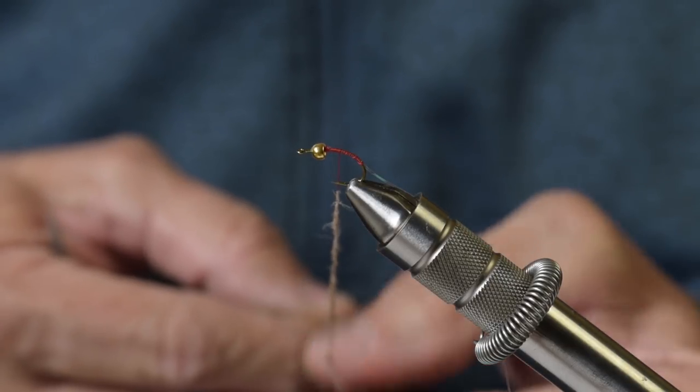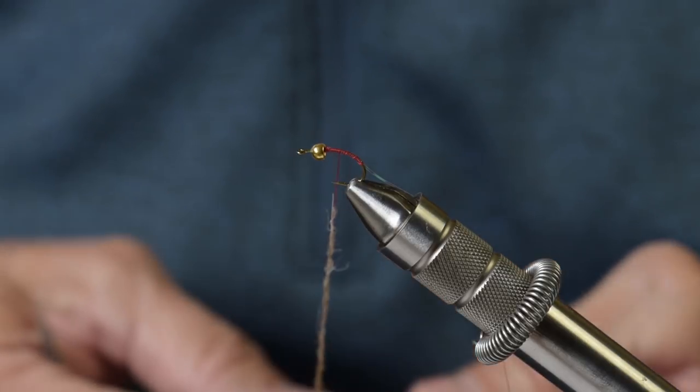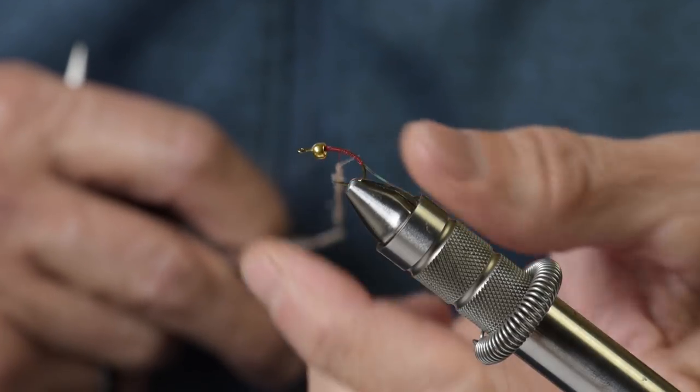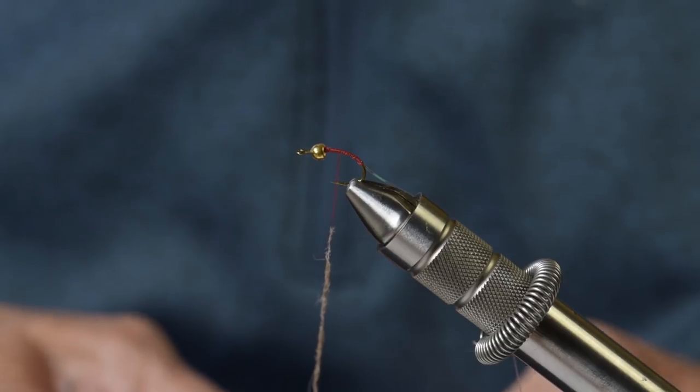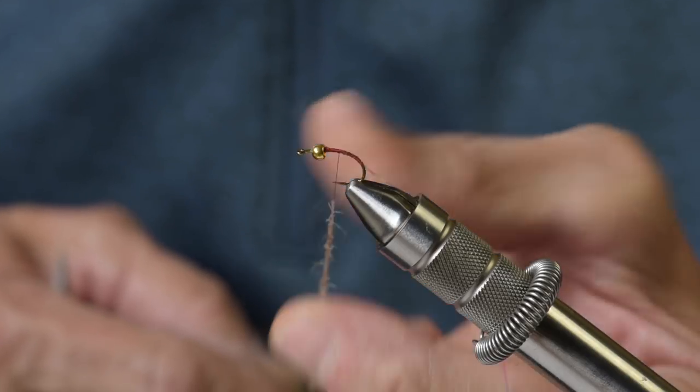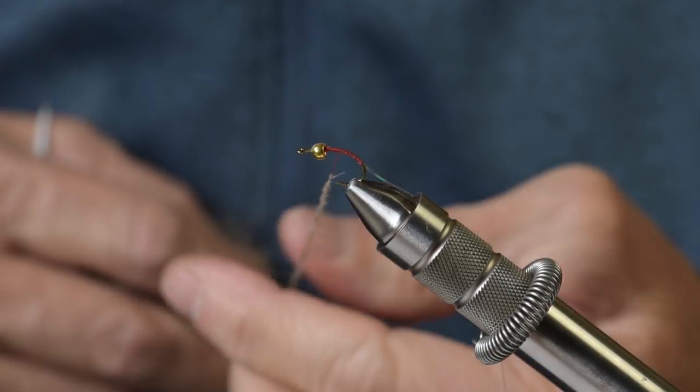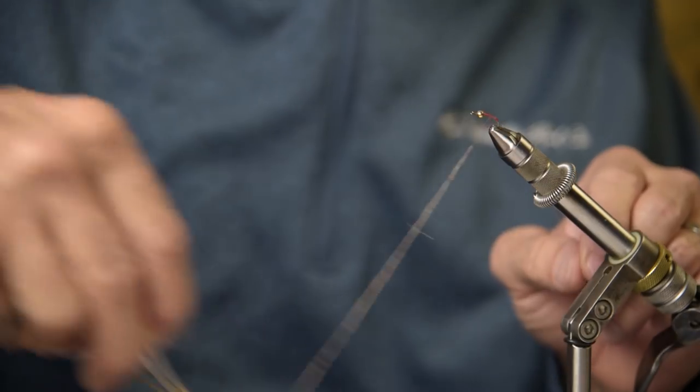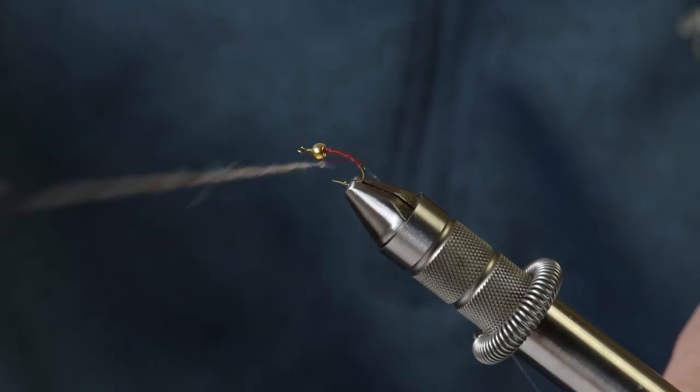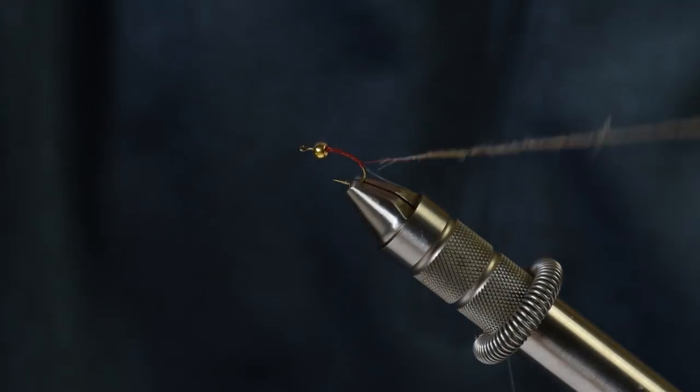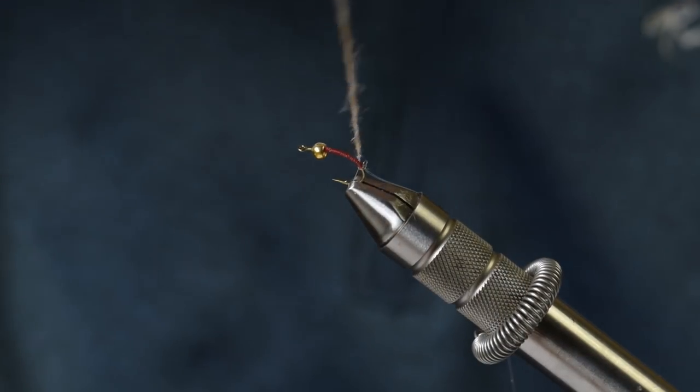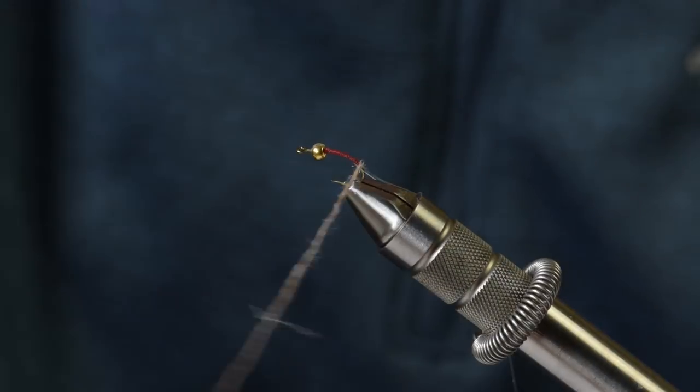I find if you kind of start with the tip of your dubbing as you first press it on, and then you can kind of gently get that to where it's parallel to your thread, and then at that point you can spin it right onto the thread. Kind of makes dubbing hassle-free, and I know dubbing for a lot of tiers can be a little bit of a nuisance until you get used to it.